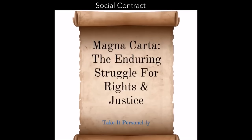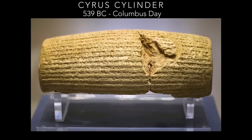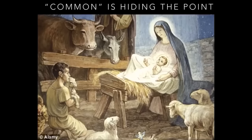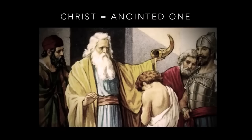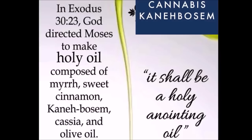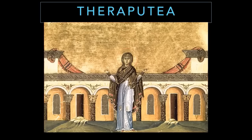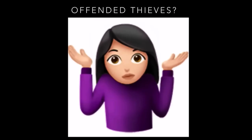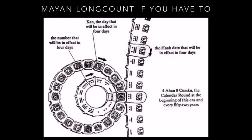Historically, a lot of social contract theory comes to the Magna Carta, although Cyrus's cylinder of Columbus Day, 539 BC, technically is perhaps more important. The important thing about that also is before Christ. I know we want to say 'common,' but there's a lot of reasons why we should talk about what that word really means. Christ and Messiah mean 'anointed one,' which referred to the Exodus oil made of cannabis that the Therapeutica used to anoint each other during the times of Gnostic Occidental mysticism. So it's interesting that they haven't changed the calendar — they've just sort of changed its name.